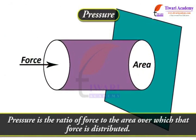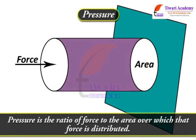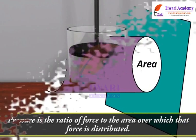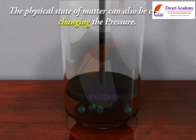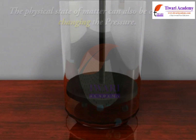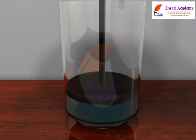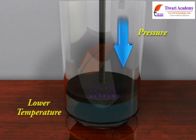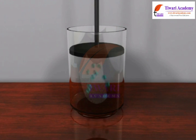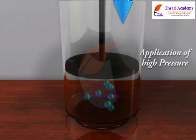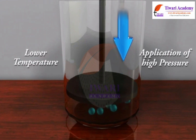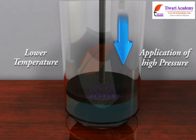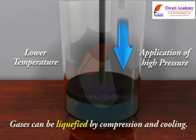Pressure is the ratio of force to the area over which that force is distributed. The physical state of matter can also be changed by changing the pressure. Gases can be liquefied by applying pressure and lowering temperature. When a high pressure is applied to a gas, it gets compressed into a small volume, and when we also lower its temperature, it gets liquefied. Gases can be liquefied by compression and cooling.